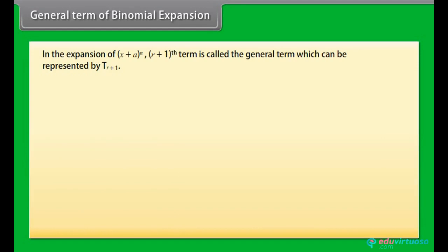General term of binomial expansion: in the expansion of (x + a)ⁿ, the (r+1)th term is called the general term, represented by tᵣ₊₁. tᵣ₊₁ = nCr · x^(n−r) · aʳ = nCr · (first term)^(n−r) · (second term)ʳ.